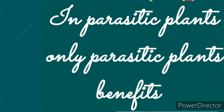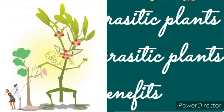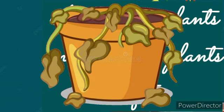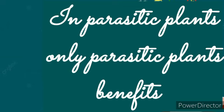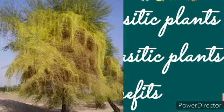Parasitic plants harm the host plant to some extent by slowing down its growth and sometimes causing heavy damage. However, parasitic plants rarely kill the host plant outright, though in some conditions they can cause significant damage.